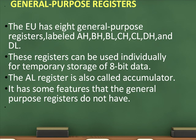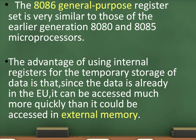These registers can be used individually for temporary storage of 8-bit data. The AL register is also called the accumulator and has some features that the general purpose registers do not have. The 8086 general purpose register set is very similar to those of the earlier generation 8080 and 8085 microprocessors.